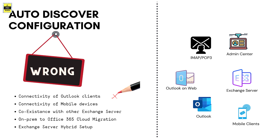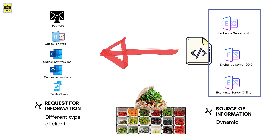When you look at organizations and compare Exchange server setups, some may have a single Exchange server, some have multiple, some have coexistence between two different versions, and some use hybrid setups. No one is fixed to one version — you might be on Exchange 2013 today, add Exchange 2019 tomorrow, and migrate to Exchange Online the following week. The configuration information required by email clients is not always the same; the source of information is dynamic and clients need to adjust as configuration changes happen.